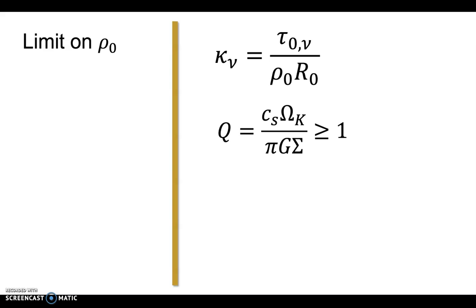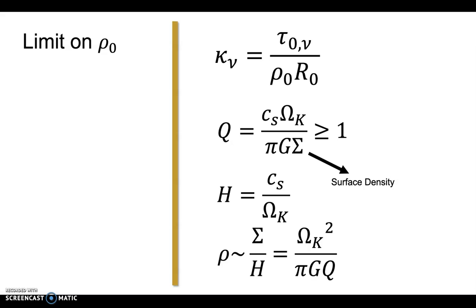In terms of the Toomre Q parameter defined here, this means that we have a limit of Q greater than or equal to 1. Given a lower limit of Q, we have an upper limit on the surface density. With a surface density known, we can obtain the midplane density from the scale height shown here. So after some algebra, we get the opacity expressed by the disk size, the stellar mass, and the characteristic optical depth.